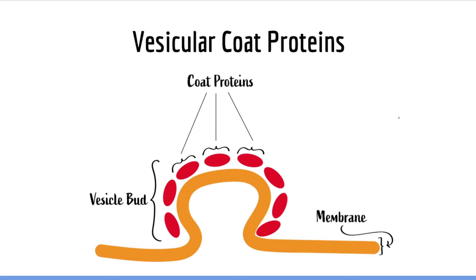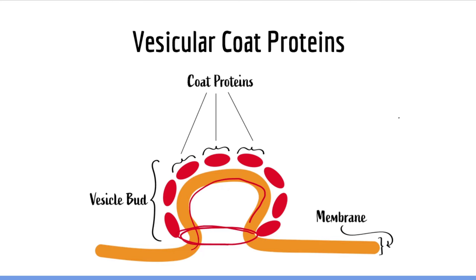Here we can see a simple representation of how vesicles are made with coat proteins. The endoplasmic reticulum, Golgi, and lysosome are all membrane-bound organelles. So in order to create a vesicle, coat proteins bind a portion of the membrane and bud off that piece of membrane in order to create a vesicle. Eventually, this area pinches off.